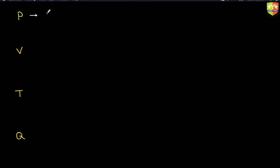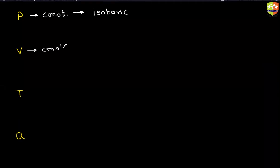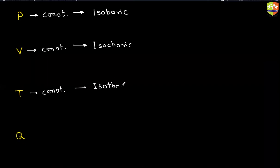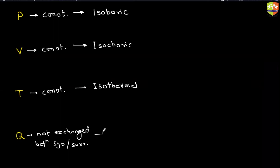For example, if pressure is constant from initial to final point — everywhere the pressure is constant — then what path name is this? Isobaric. The name of the path is isobaric. If volume is constant, isochoric. If temperature is constant, isothermal. And if heat is not exchanged between system and surrounding, then it is adiabatic.